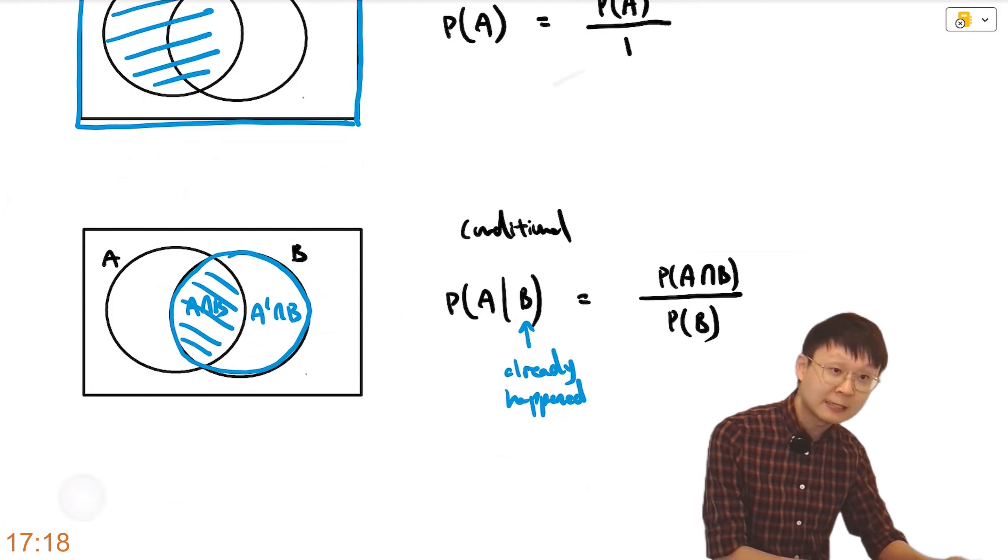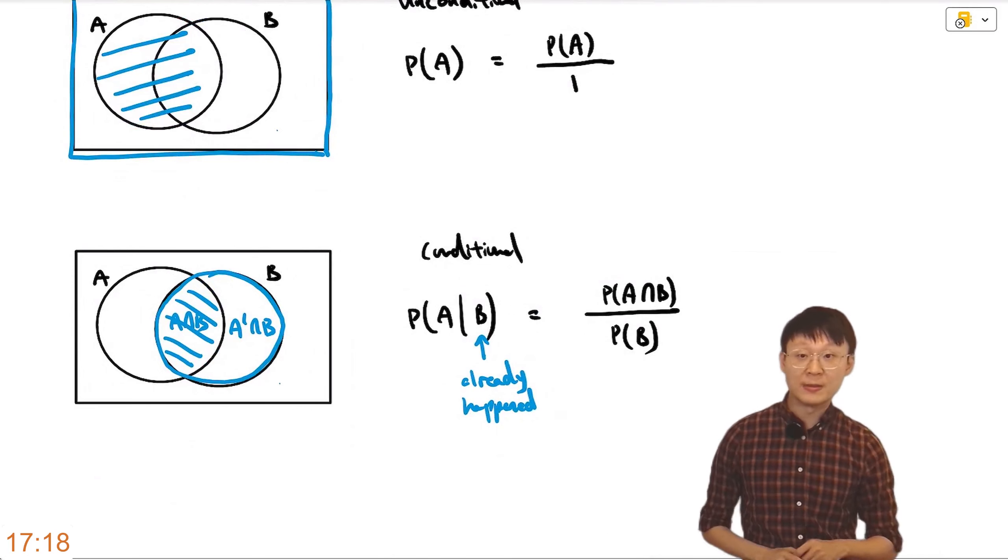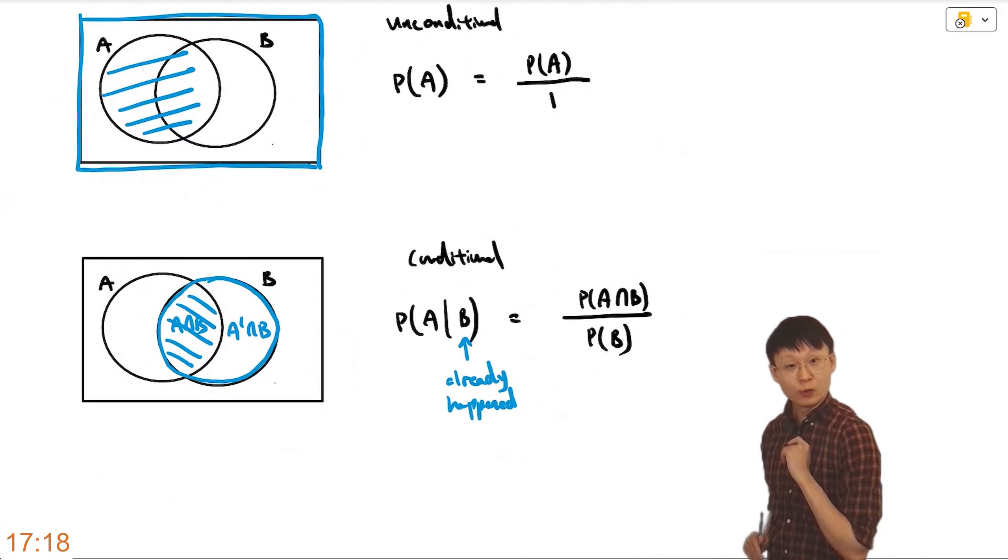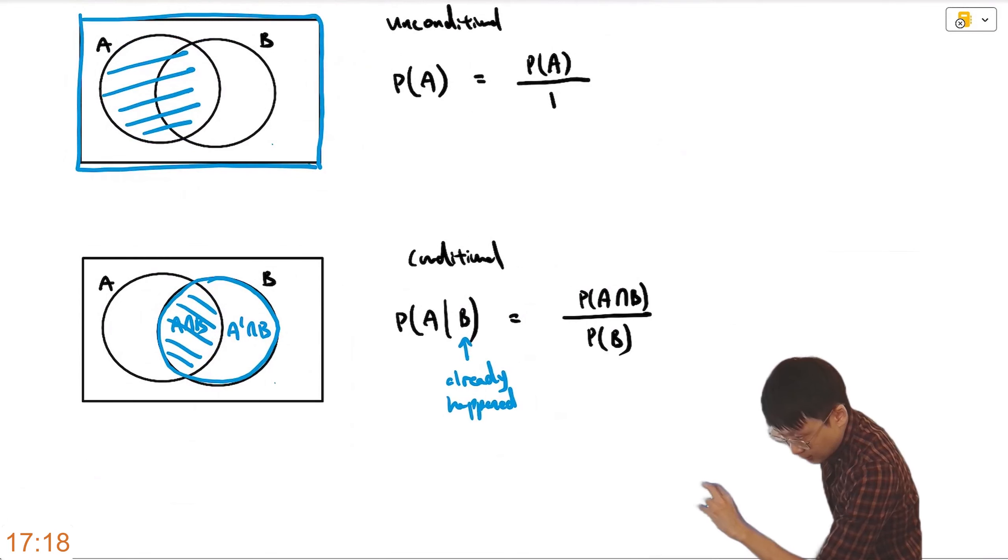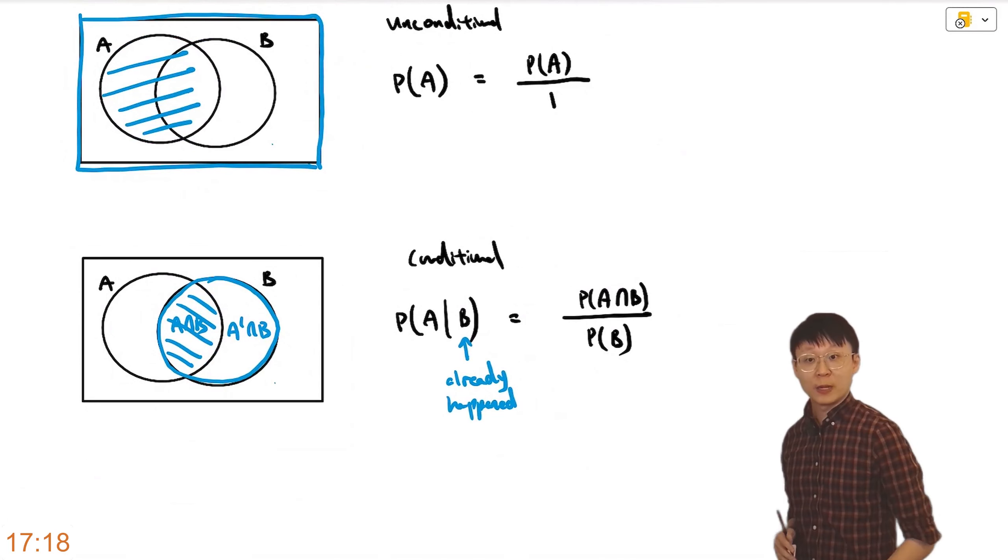Imagine shading this, but not in 100% universe, within B. It is still a ratio of area, but now the area has become smaller, but the universe has also become smaller.